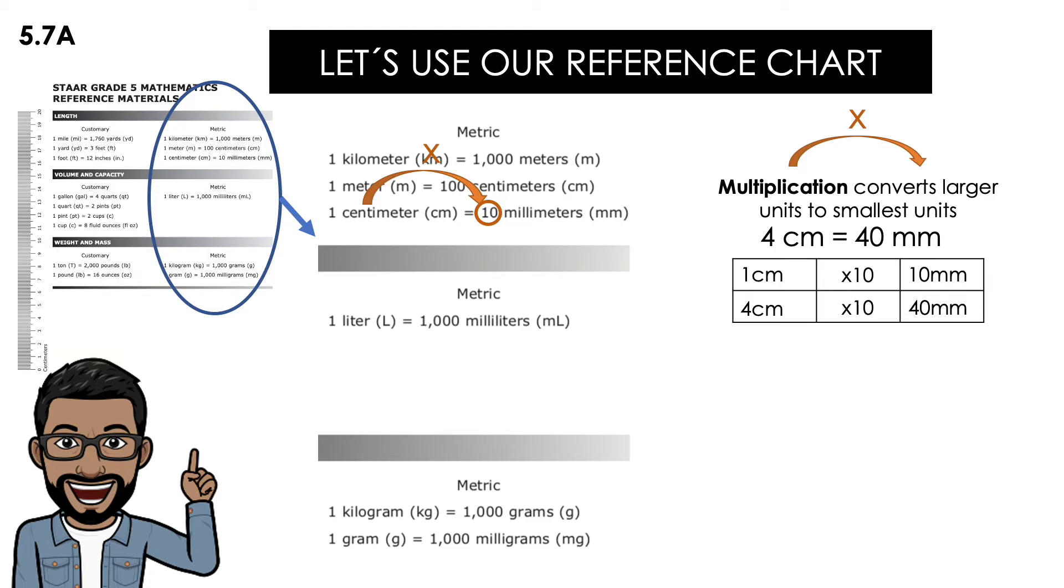That's it guys, as easy as that. And now whenever we're doing division, is whenever you're converting smaller units to larger units. So in this case, you want to convert 6000 grams into kilograms.